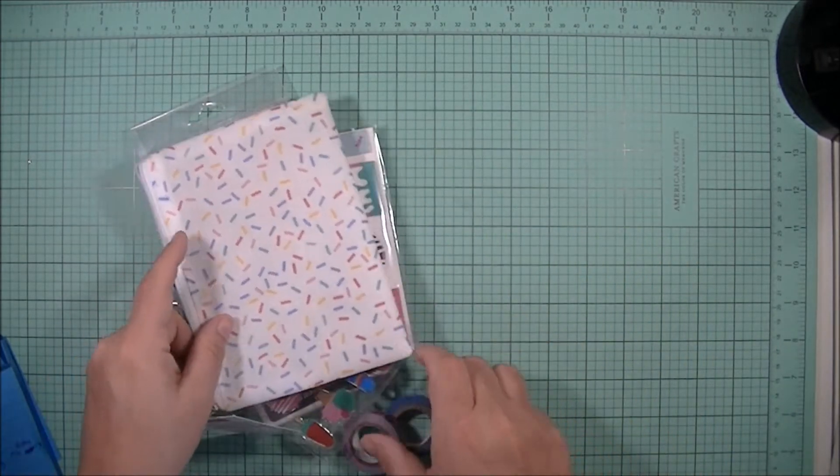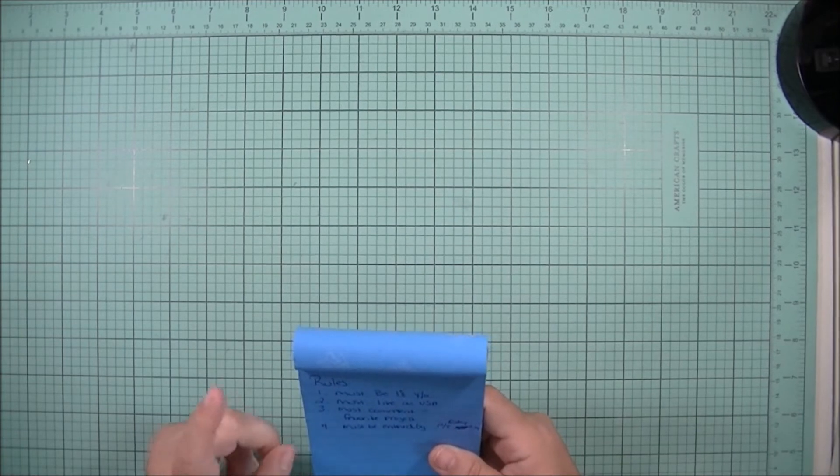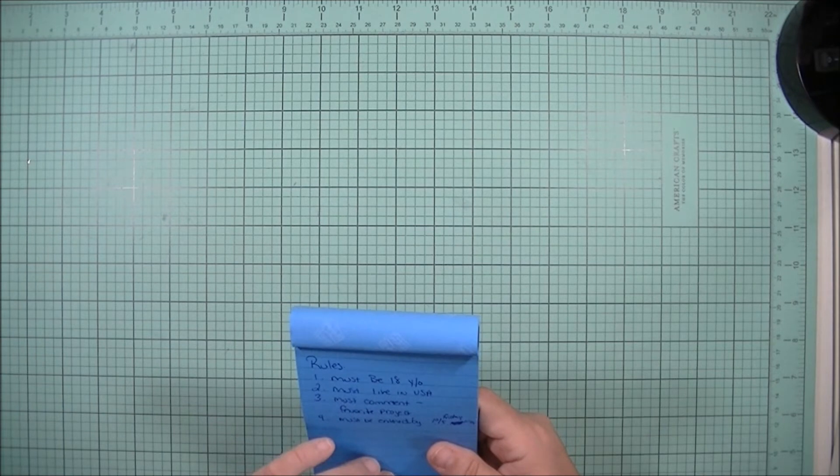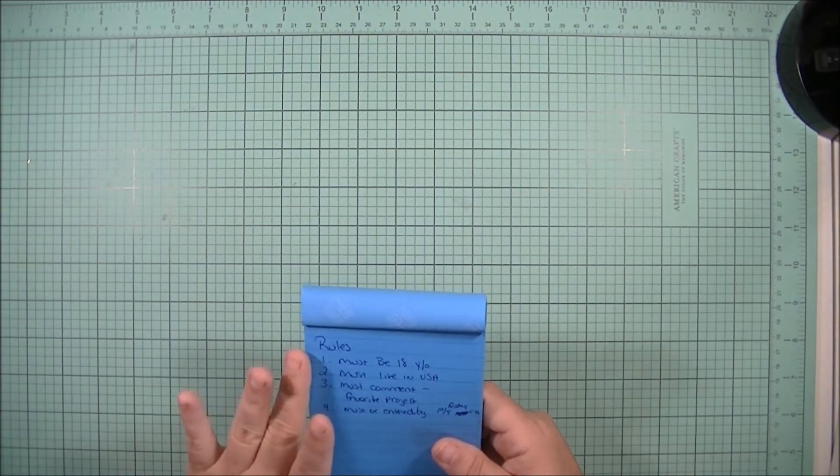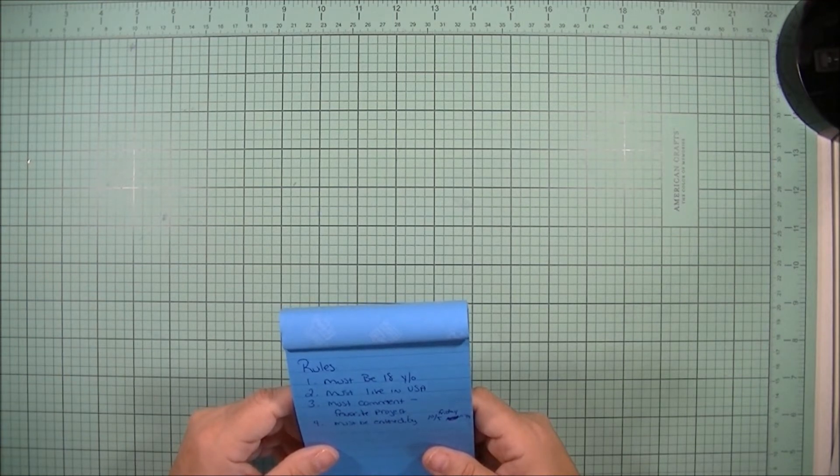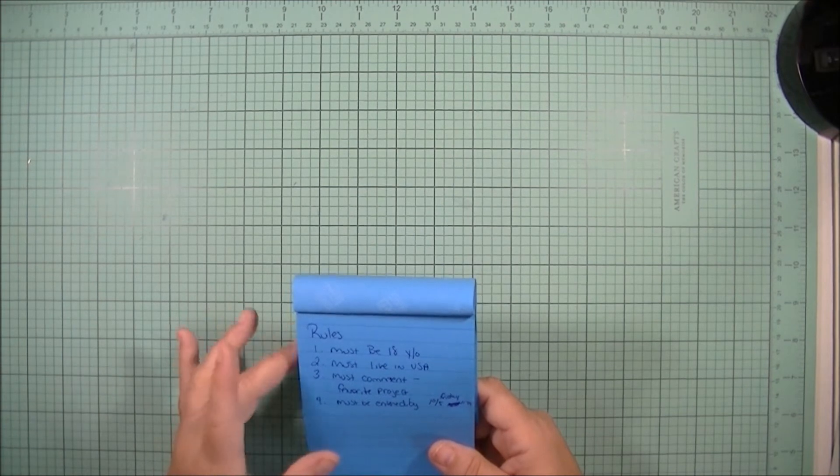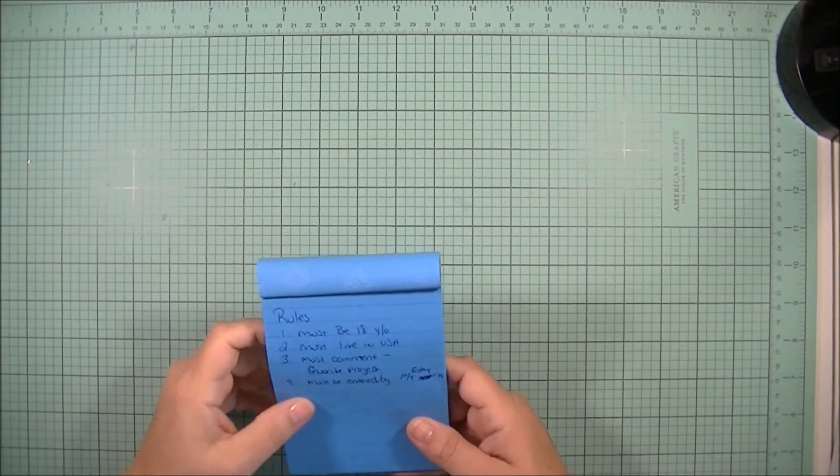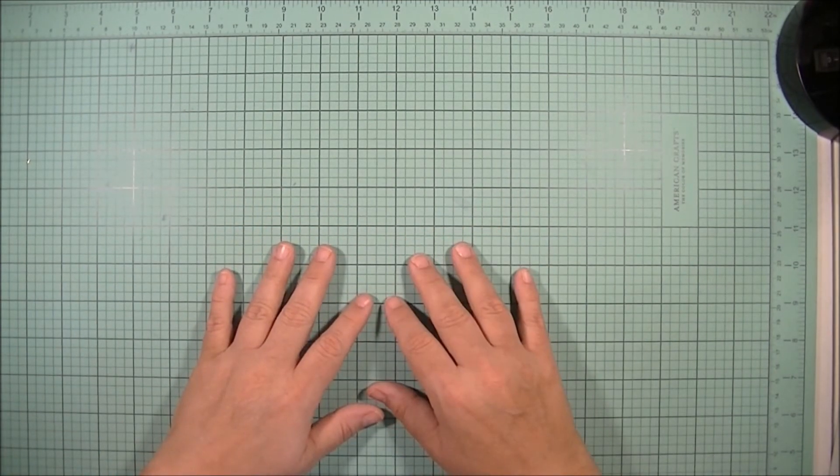This is what you need to do in order to win the giveaway. You must be 18 years of age or older because I will need your address. You must live in the USA - I'm not doing international right now. You must comment on this video and let me know what your favorite project was from the five projects I completed, actually six projects. Just mention in the comment what your favorite project was. You must do it by Friday, which is the 5th of October by 11:59 p.m. You must have your comment entered in before then. You're not required but I'd appreciate a thumbs up on this video. If you haven't subscribed, please subscribe. That's it, that's how simple the giveaway is going to be.